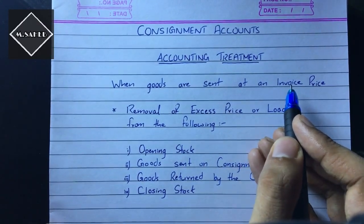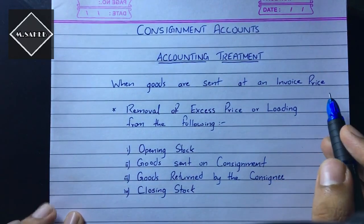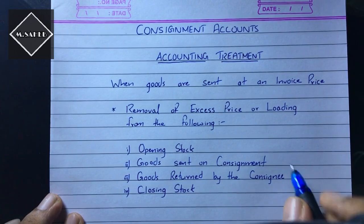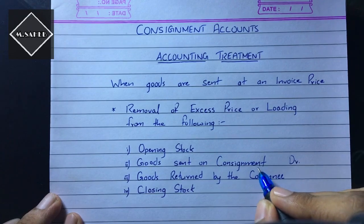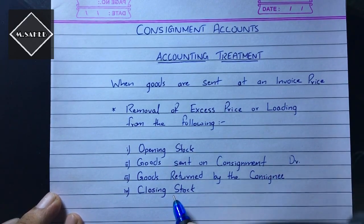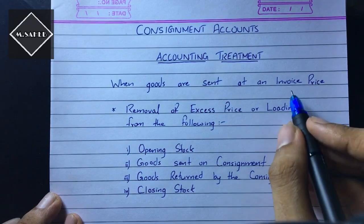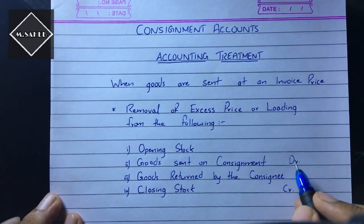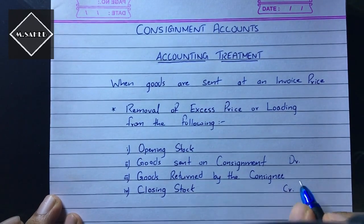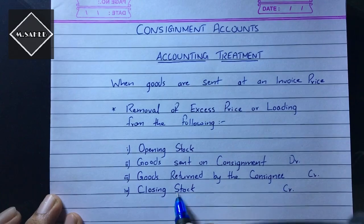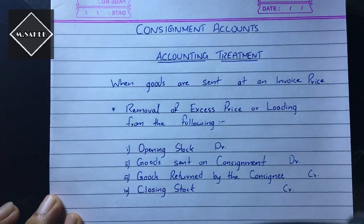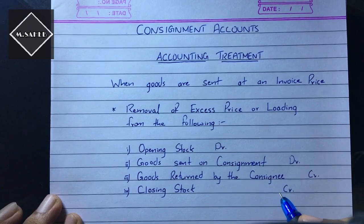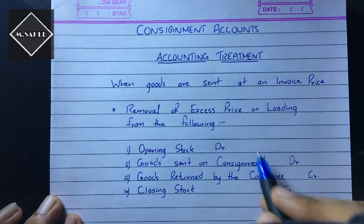When the goods are sent at an invoice price, everything will be based on the invoice price. Goods sent on consignment are taken on the debit side of the consignment account and recorded at invoice price. Similarly, the closing stock credited in the consignment account will also be valued at invoice price. If the closing stock is credited, then the next year opening stock will be debited. All four items need to be adjusted by eliminating the loading.